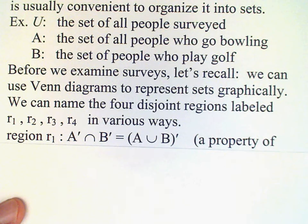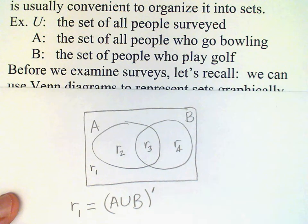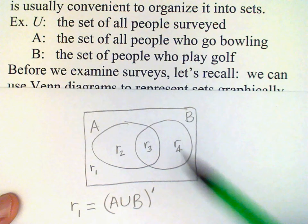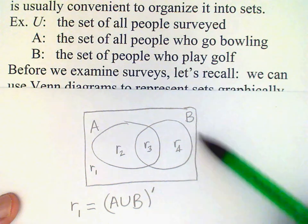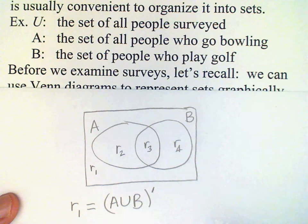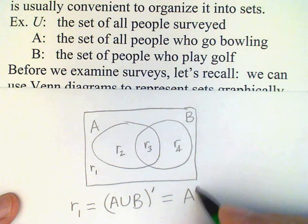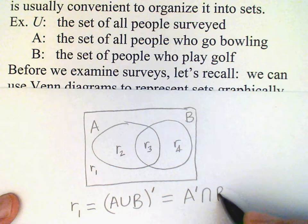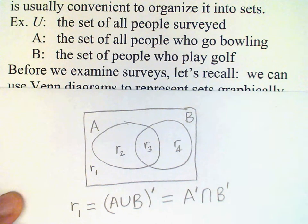Another way that we could name this region is as the intersection of the complements of each of these sets. In other words, the region that is outside of A and the region that is outside of B, where these overlap is r1, so complement of A intersected with complement of B. We have two different ways of naming this region.